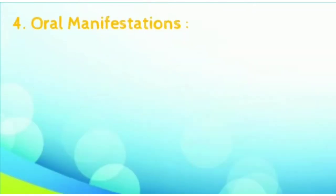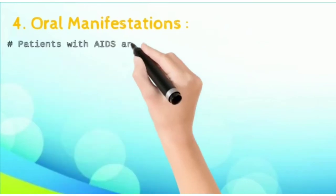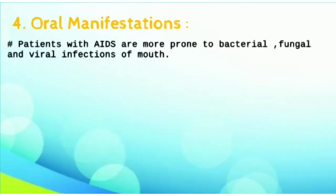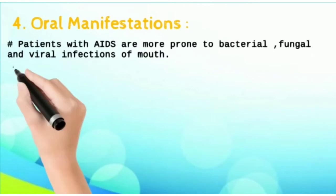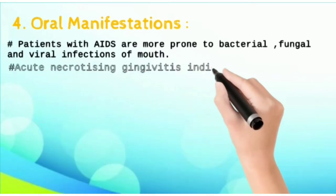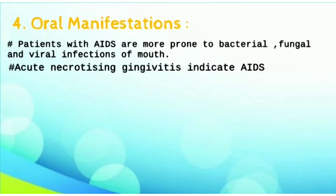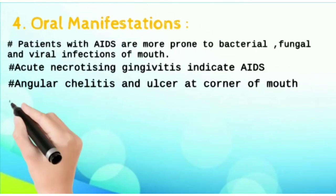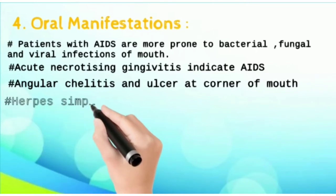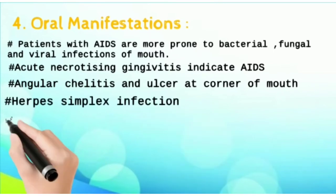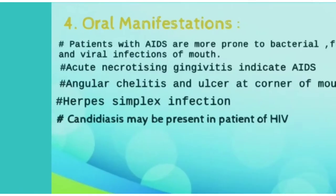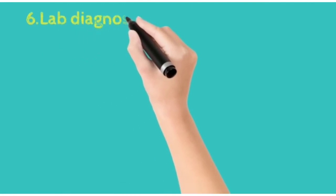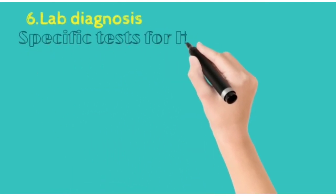Oral manifestations: patients with AIDS are more prone to fungal and viral infections. Acute necrotizing gingivitis also indicates AIDS. Herpes simplex infection, angular cheilitis, and ulcers at the corner of the mouth are all oral manifestations of this virus. HIV-infected patients may also have candidiasis.